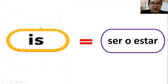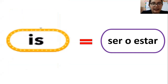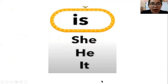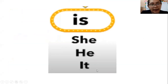Pues bien, chicos, el verb to be is. ¿Qué significa is? Significa ser o estar. Y va acompañado de estos subject pronouns: de she, de he y de it — ella, él, eso.